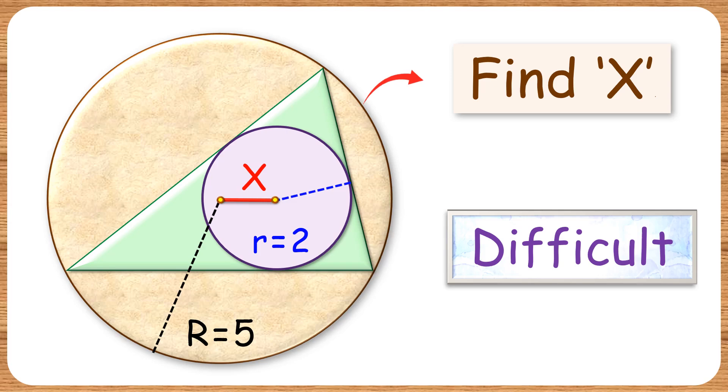Welcome everyone. In this interesting question, we have a green triangle with a circumcircle with radius 5 centimeters and an incircle with radius 2 centimeters. With this limited data, we have to find the distance between the centers of these two circles, or value of x.